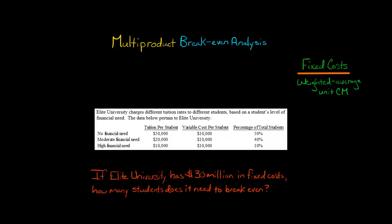We also have what we call the sales mix, and this is very important because if we make bad assumptions here, our break-even point is going to be wrong. We're going to assume that 50% of students have no financial need, 40% have moderate financial need, and 10% have high financial need.